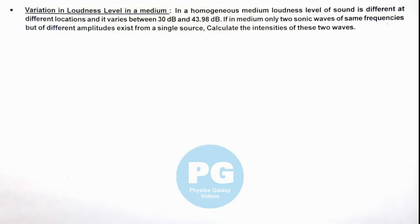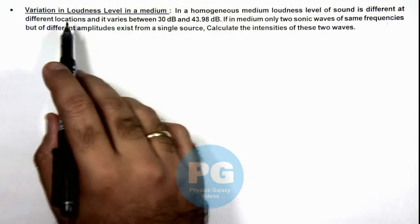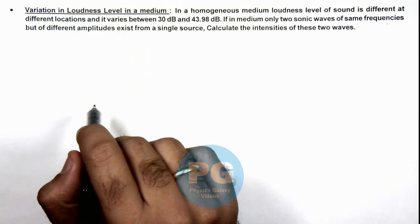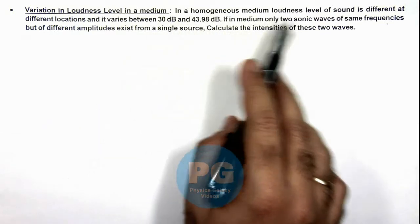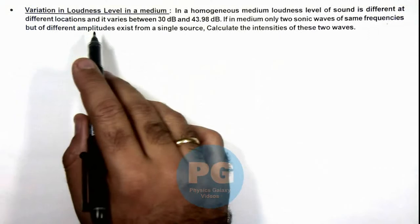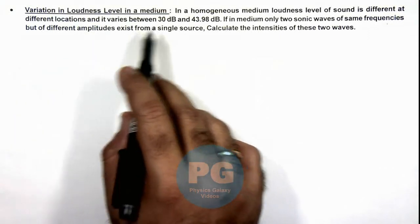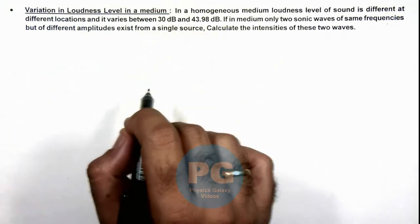In this illustration we'll discuss about variation in loudness level in a medium. Here we are given that in a homogeneous medium loudness level of sound is different at different locations and it varies between 30 decibel to 43.98 decibel.